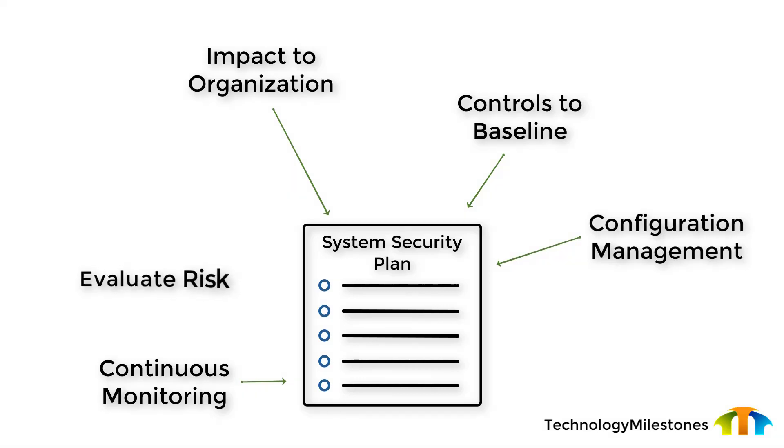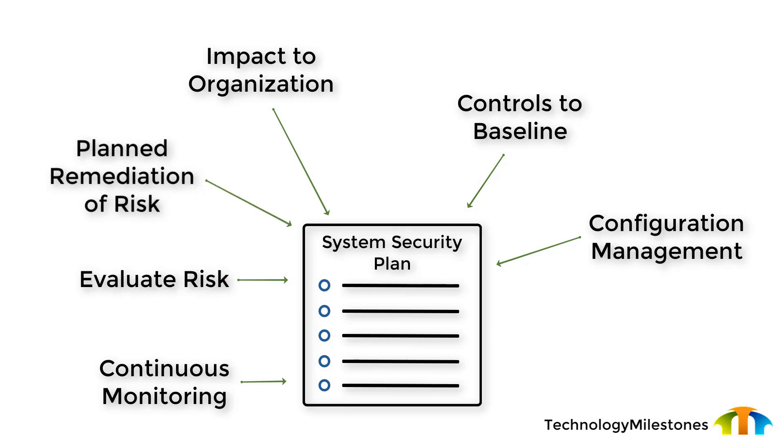Now that all of that is established, we're continually monitoring these controls to meet the desired level of security. We need to evaluate the risk that's in the environment — how well are we doing? Are the controls we've put in place helping us? And when they don't help us, we need to make sure we have a clear and defined path to remediation. Planned remediation of risk is where some change management comes in as well.